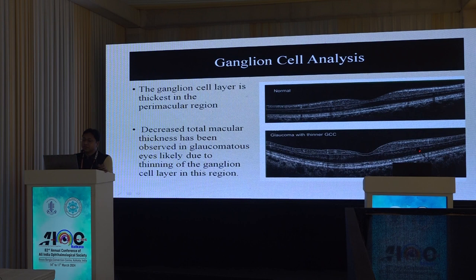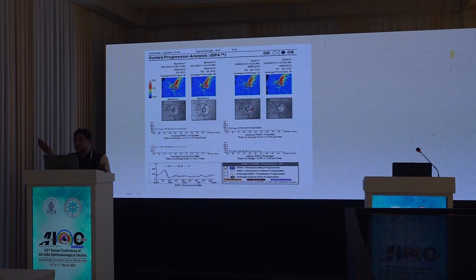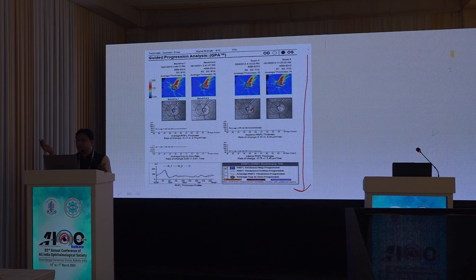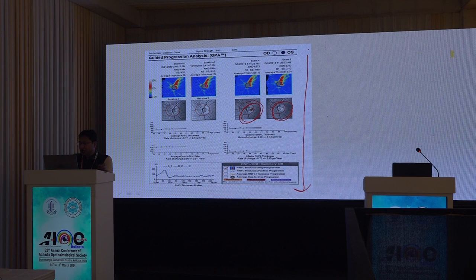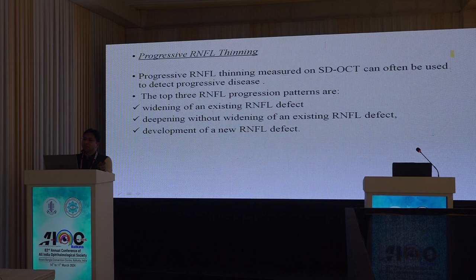Progression analysis is now available in OCT software. On a progression graph, the baseline shows no change for the first two examinations, but by the third, fourth, and fifth examinations a red flag zone may appear — indicating that changes have started. Serial monitoring of RNFL over time can track progression, and if someone is showing RNFL progression they may convert to frank glaucoma later.